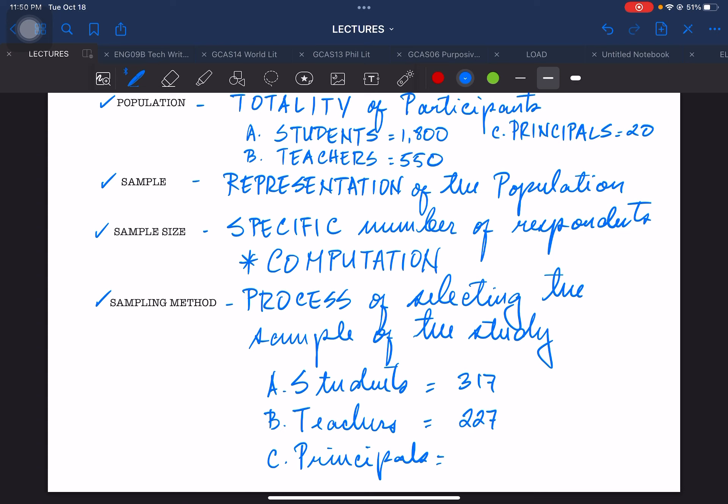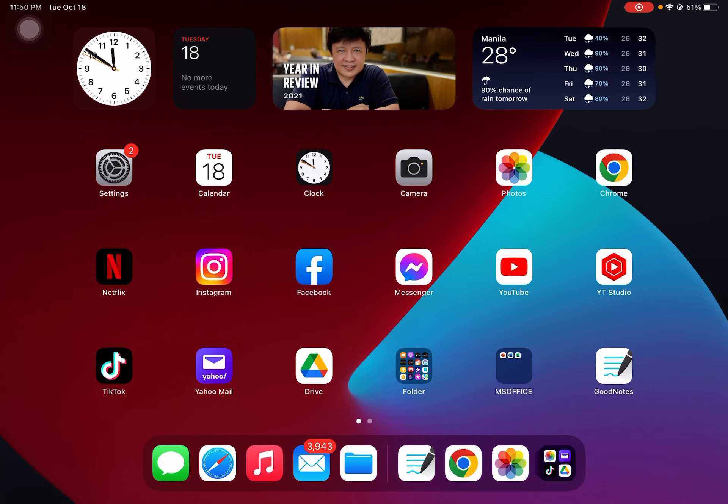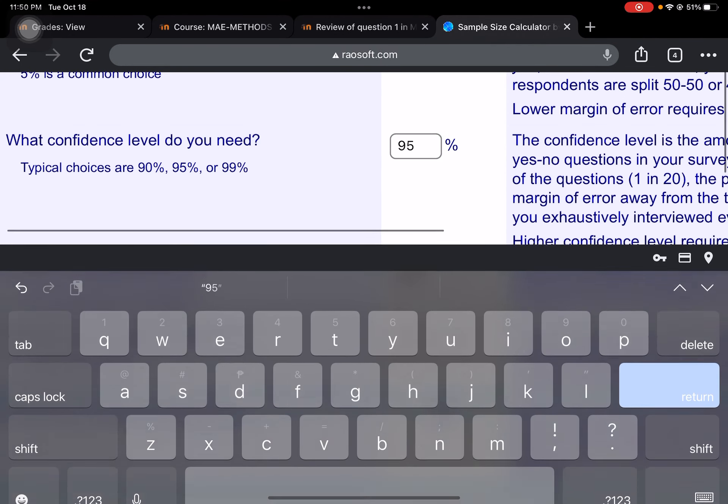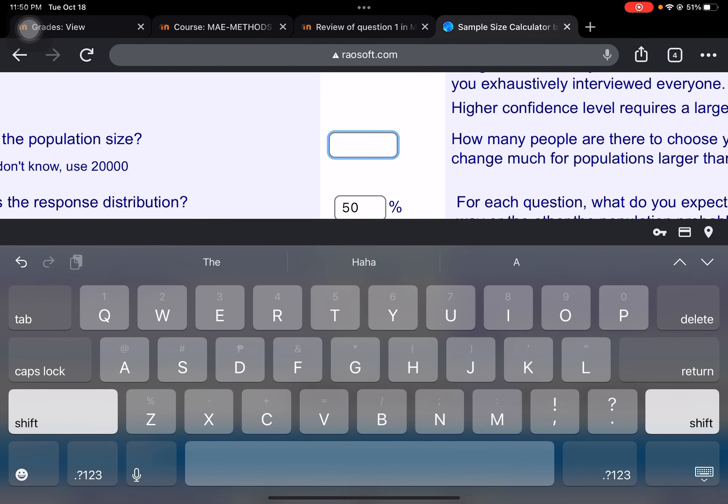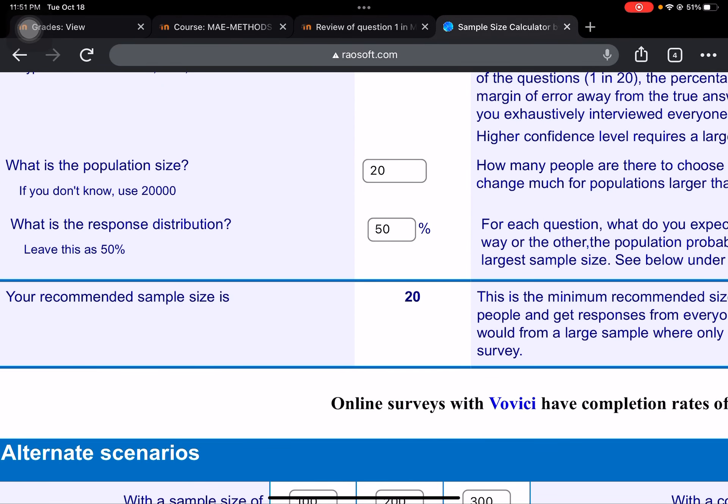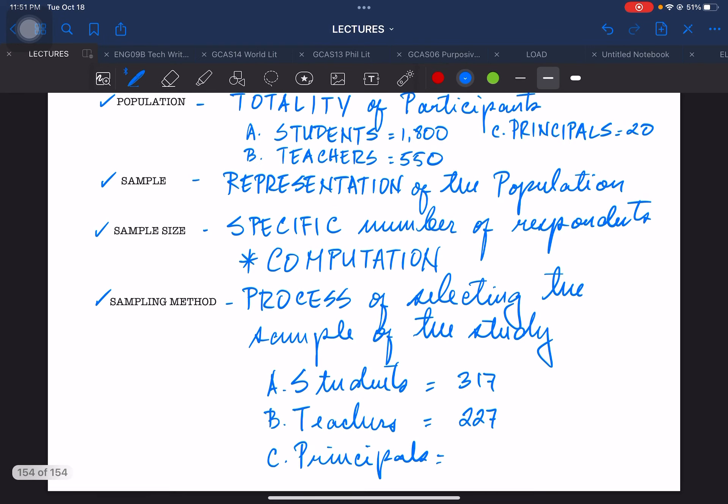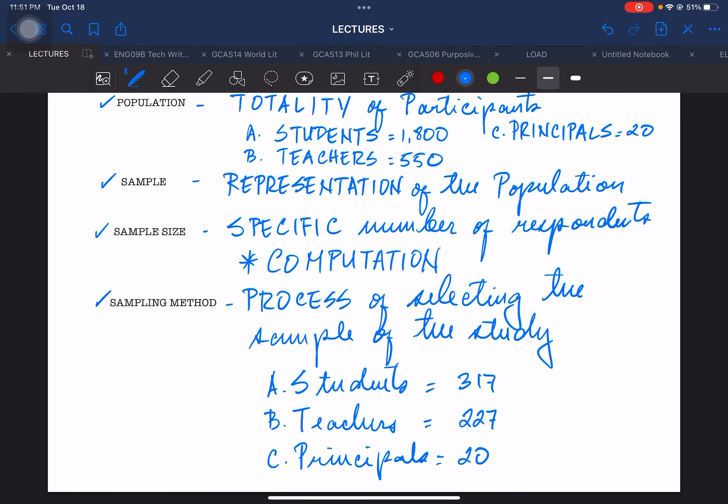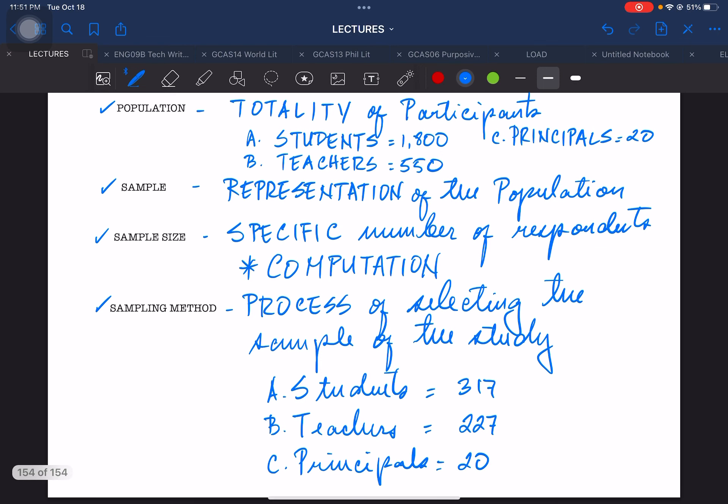And then for the principles, what if you only have 20 principles as the population? So, let's enter the value 20, not that one, here. So, let's enter 20 and then look at the recommended sample size which is 20. So, let's enter it here. So, for the principles, you will have to get all of the principles as your sample size. So, again, the sample sizes for the following examples that we use are the following. So, these are already the computed sample size.